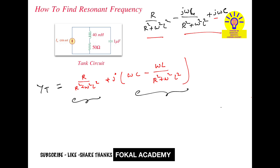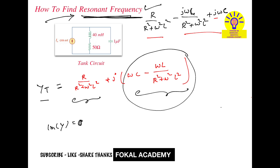Now we can find the resonant frequency. At resonant frequency, the imaginary part of the admittance is equal to zero. So we set the imaginary part to zero: ωC − ωL/(R² + ω²L²) = 0. This condition is our key to finding the resonant frequency ω₀.